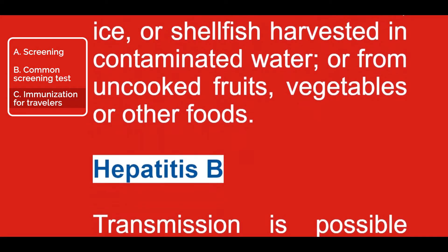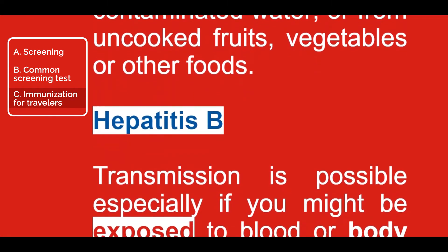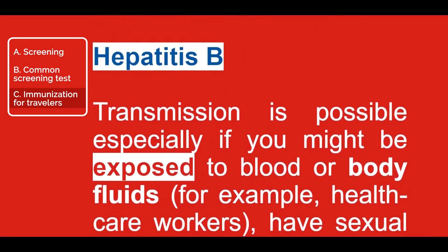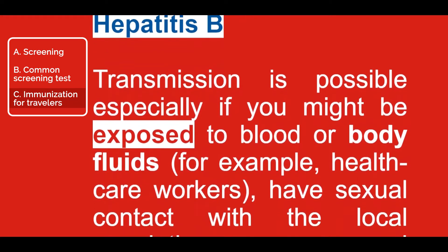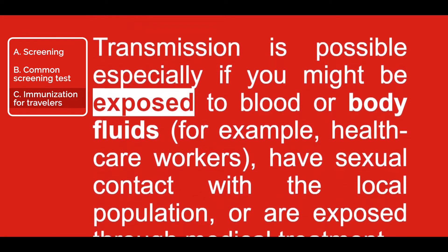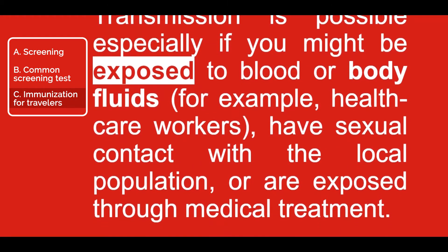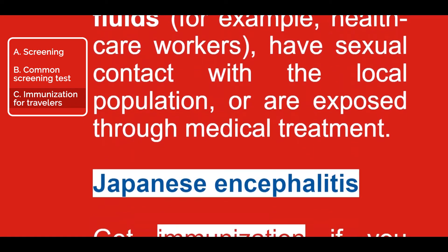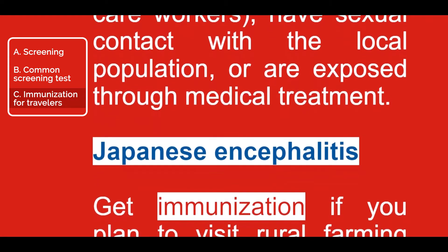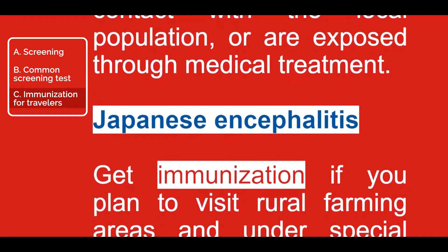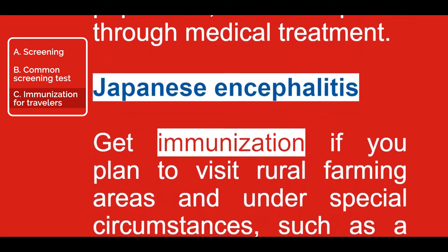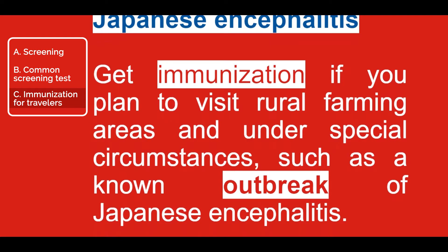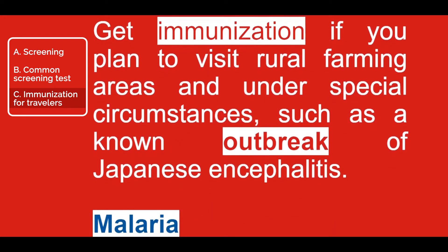Hepatitis B: transmission is possible, especially if you might be exposed to blood or body fluids — for example, healthcare workers — have sexual contact with the local population, or are exposed through medical treatment. Japanese encephalitis: get immunization if you plan to visit rural farming areas and under special circumstances such as a known outbreak of Japanese encephalitis.